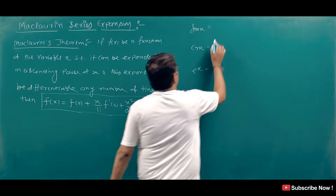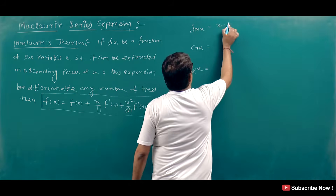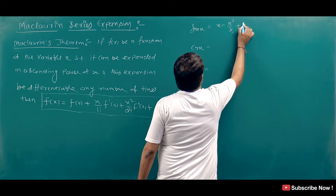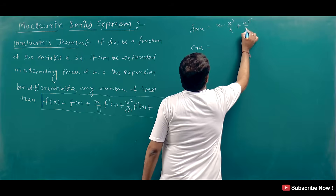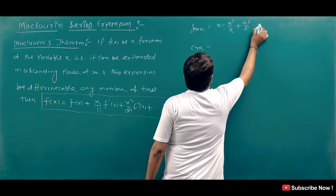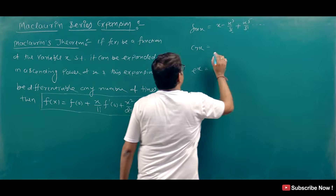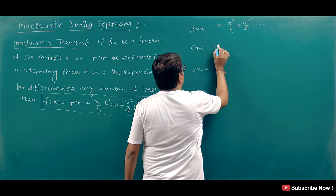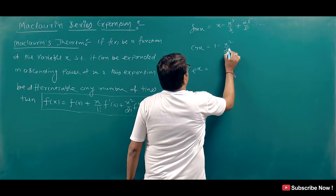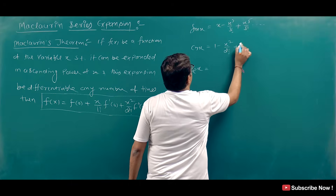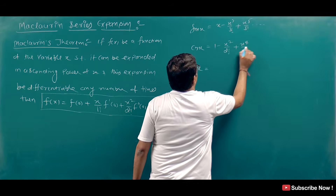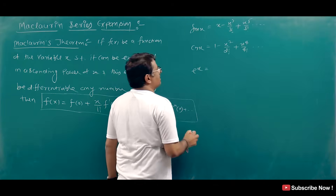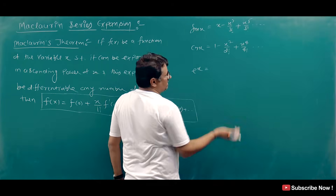We know the sin x series is: x - x³/3! + x⁵/5! — this type of alternating series. And the cos x series is: 1 - x²/2! + x⁴/4! — this type of series.